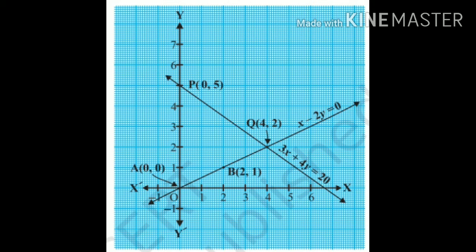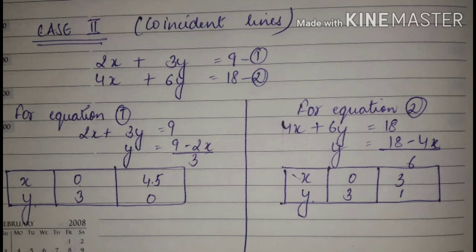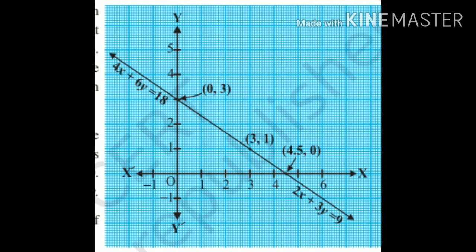Now we see Case 2, where I have taken two equations: 2x + 3y = 9 and 4x + 6y = 18. Similarly, I calculated the y values. From 2x + 3y = 9, we get y = (9 − 2x)/3. You can see that both lines fall on each other — 4x+6y=18 and 2x+3y=9 coincide. So from this type of graph we can say that these linear equations have infinite solutions.